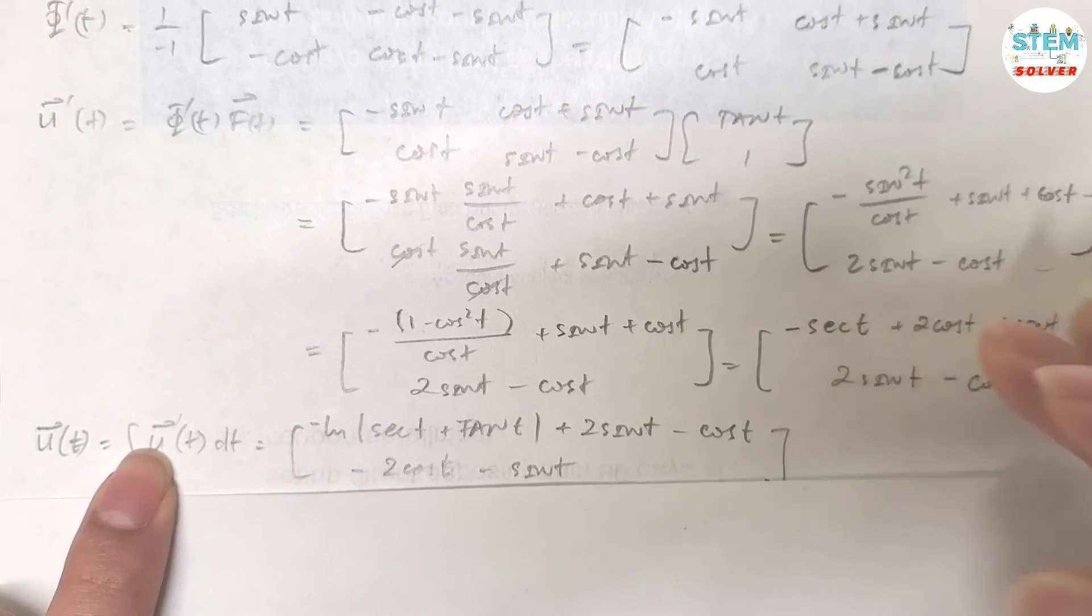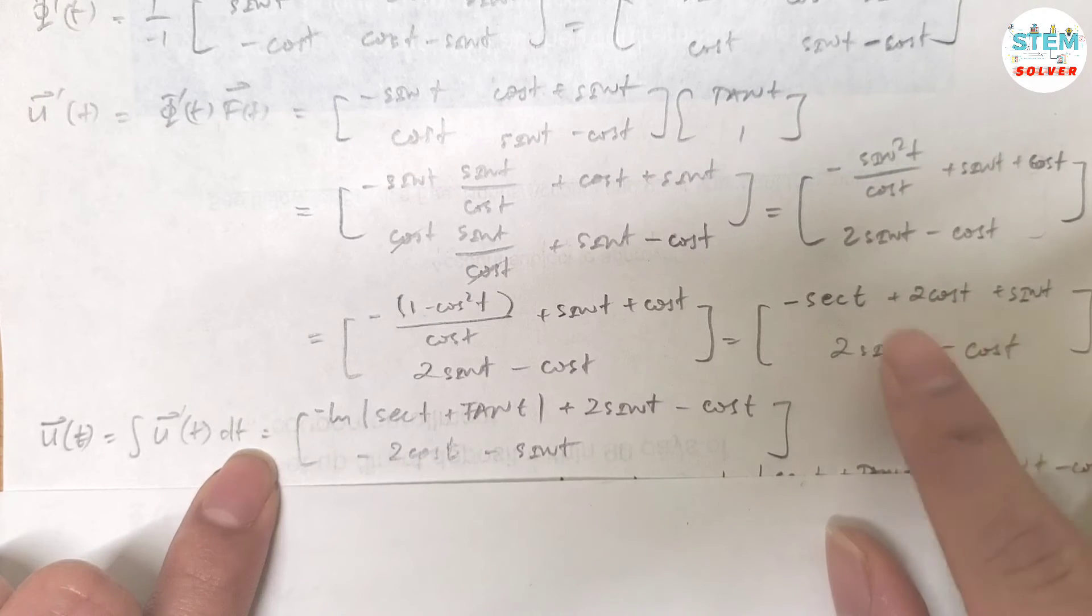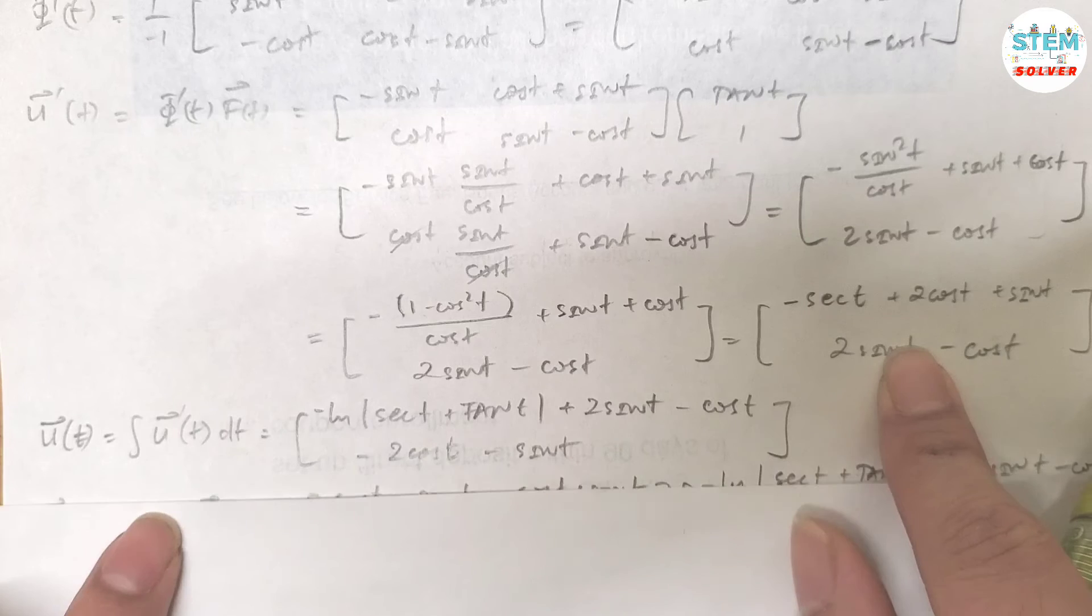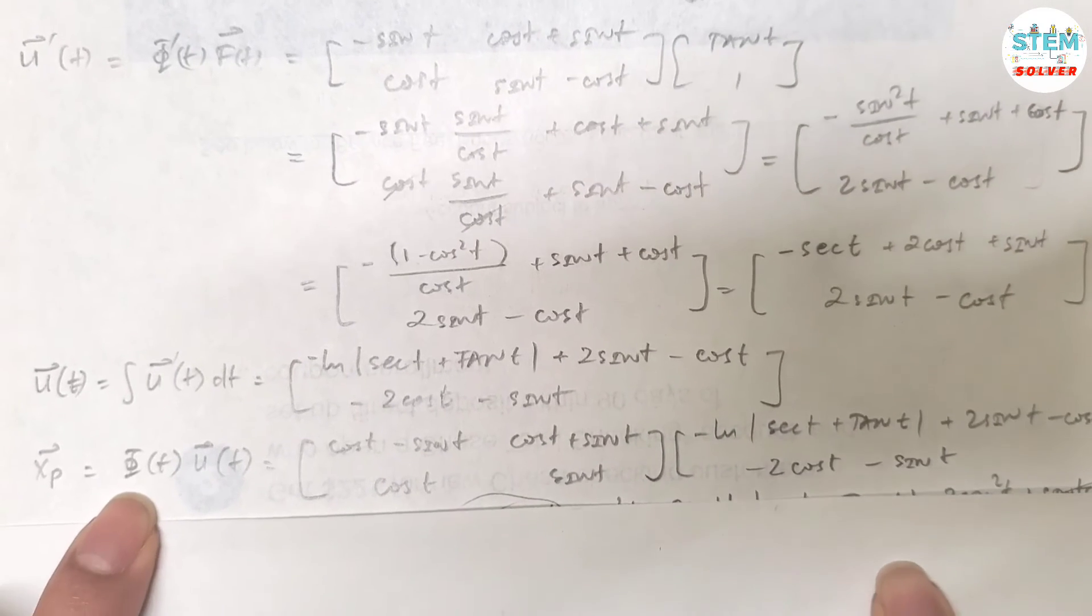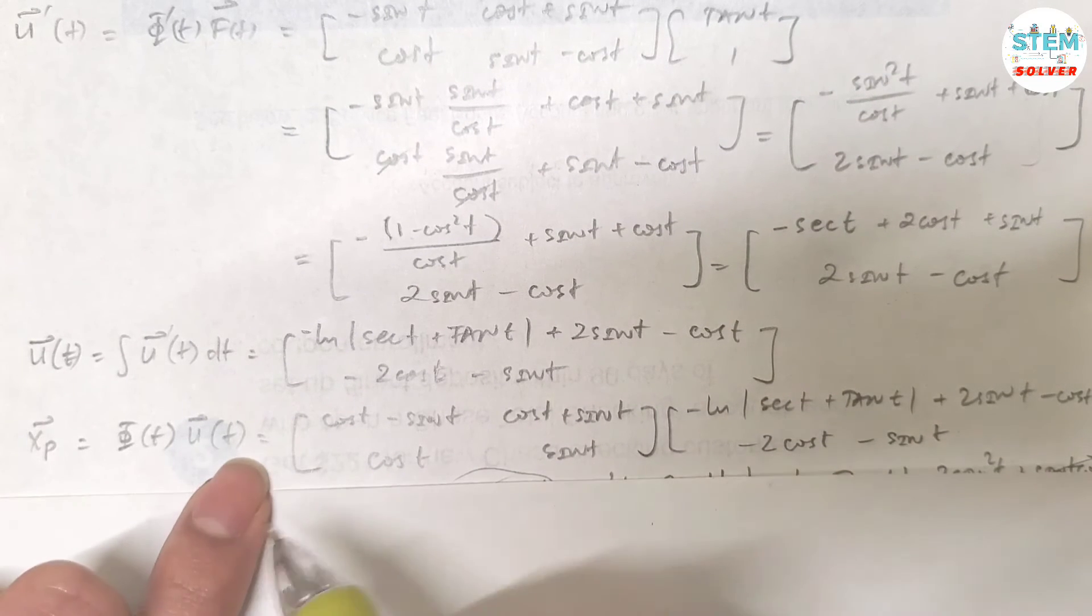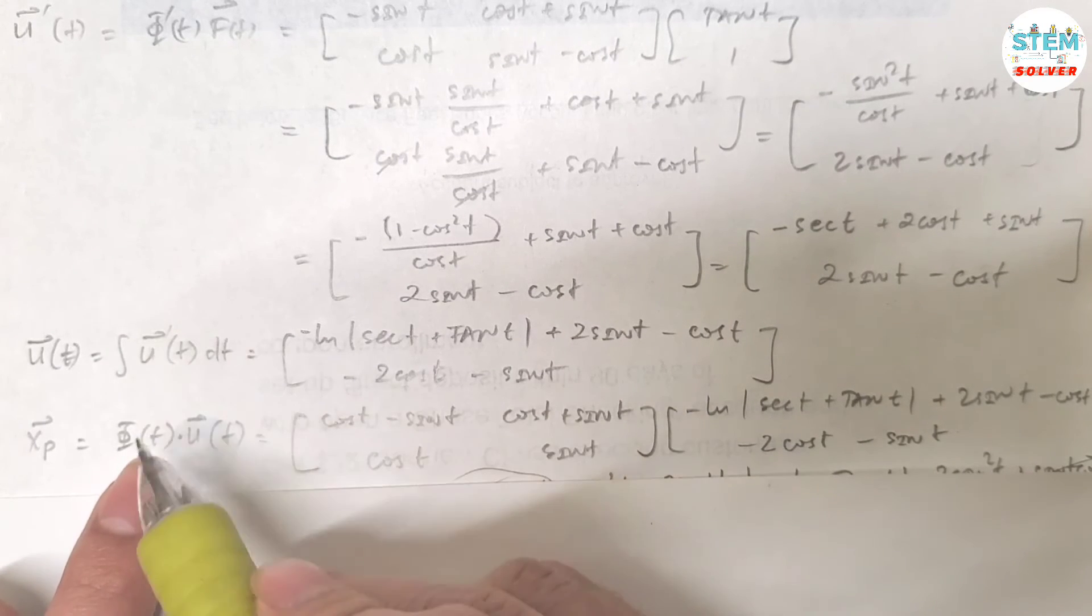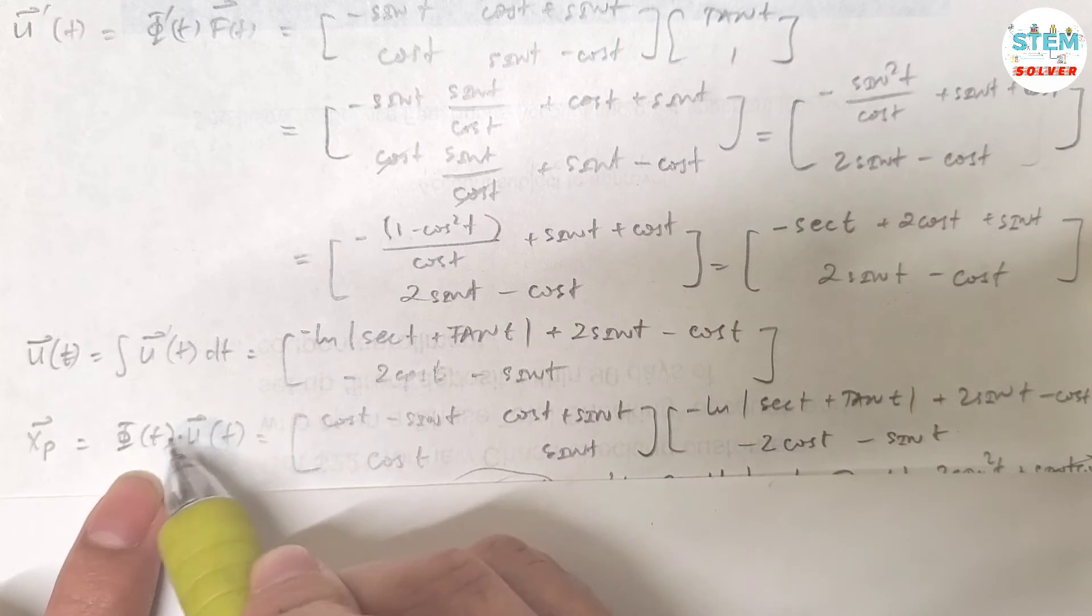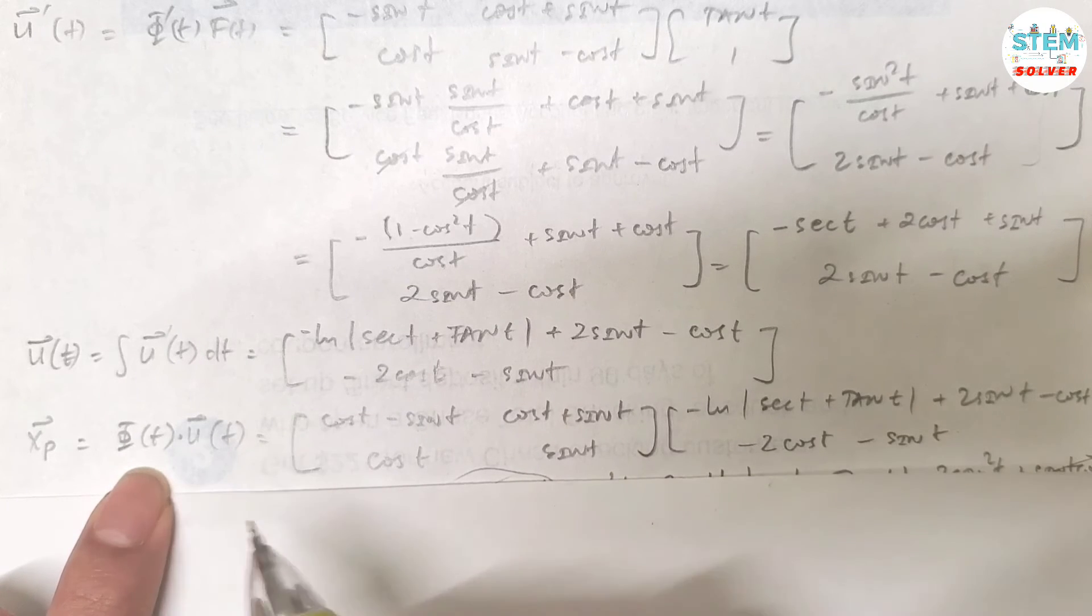Doing simplification I will get this matrix. Next step is to find the integral of this one. Okay, so the integral of this one, apply the integral to this matrix, it gives me this matrix. And your final step is to write your non-homogeneous part, which is equal to Φ(t) times u(t). Again, do not switch their positions like u(t) times Φ(t). It will give you a different answer, and that is not correct, okay?